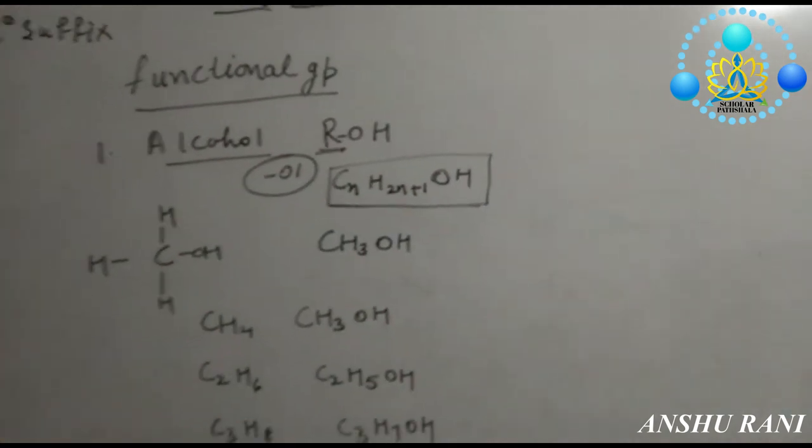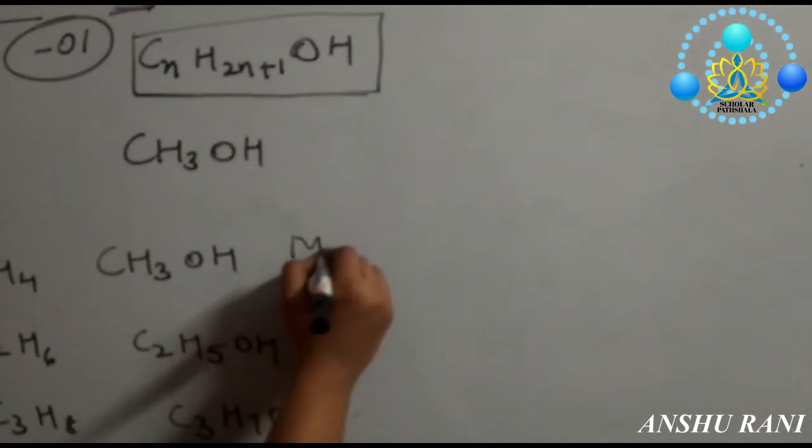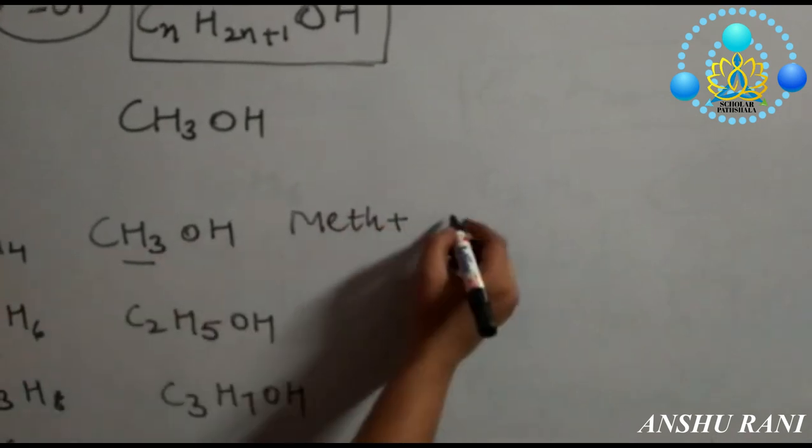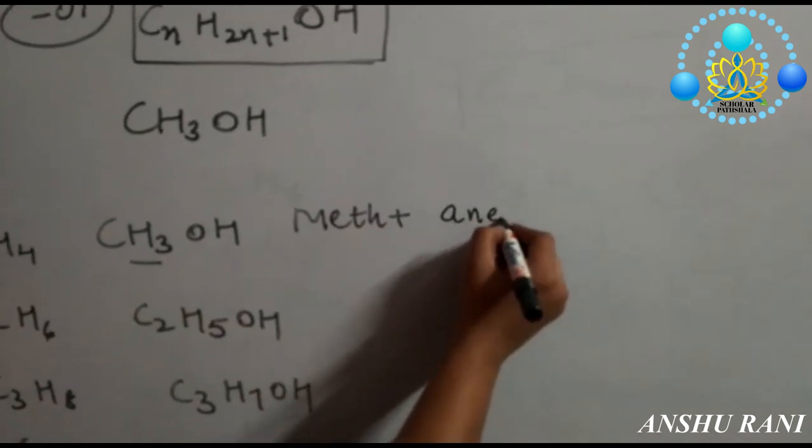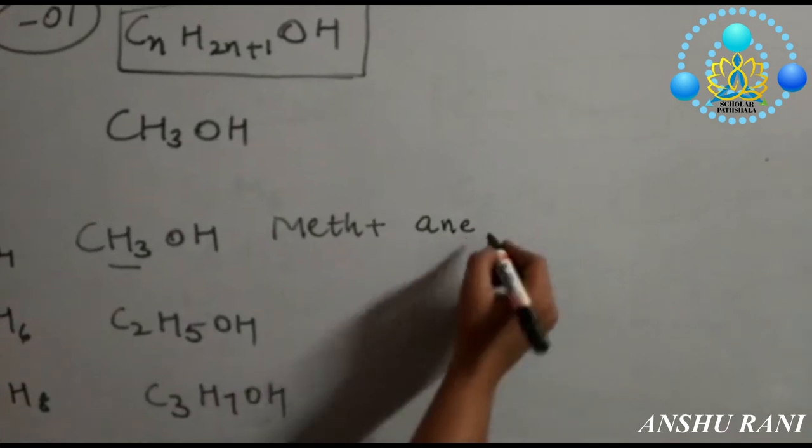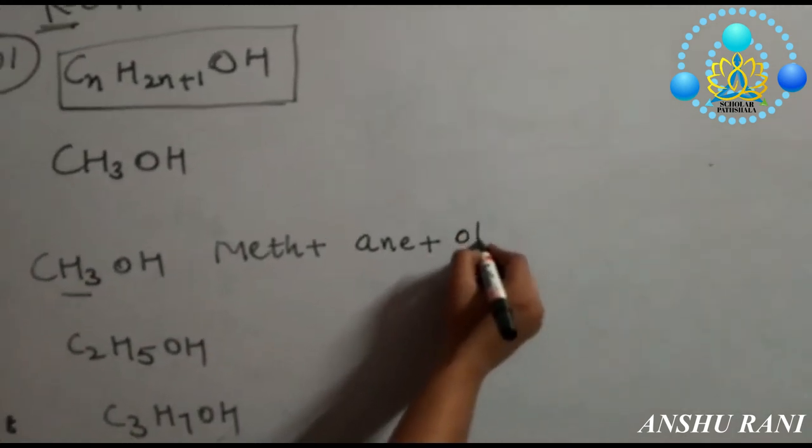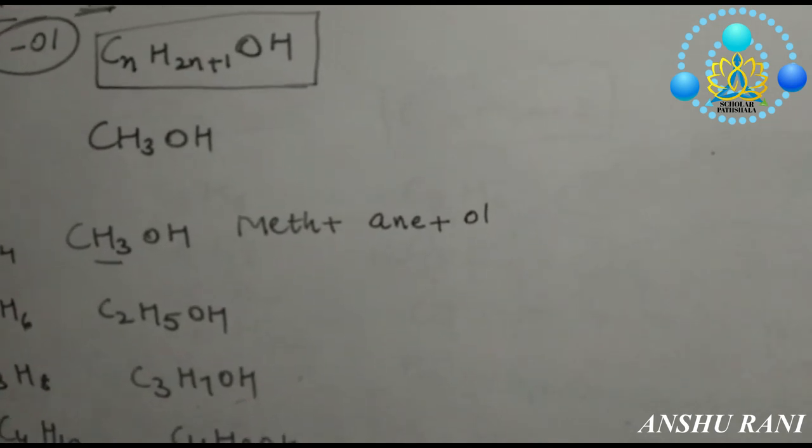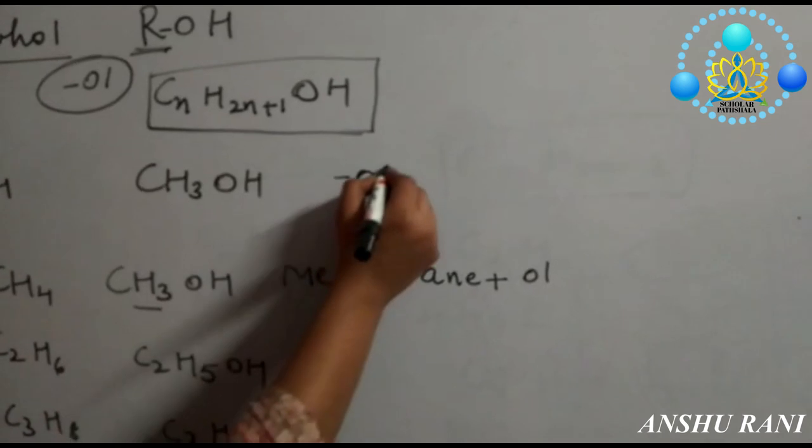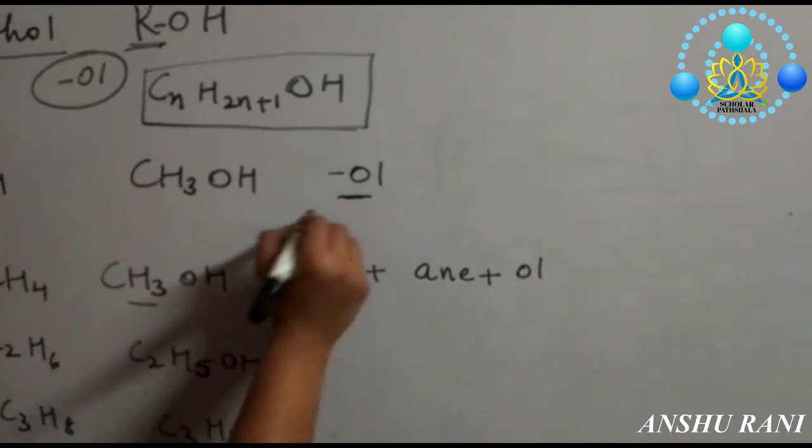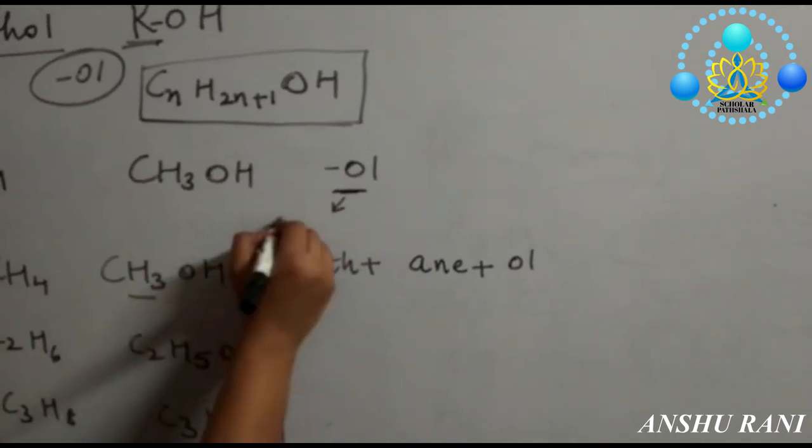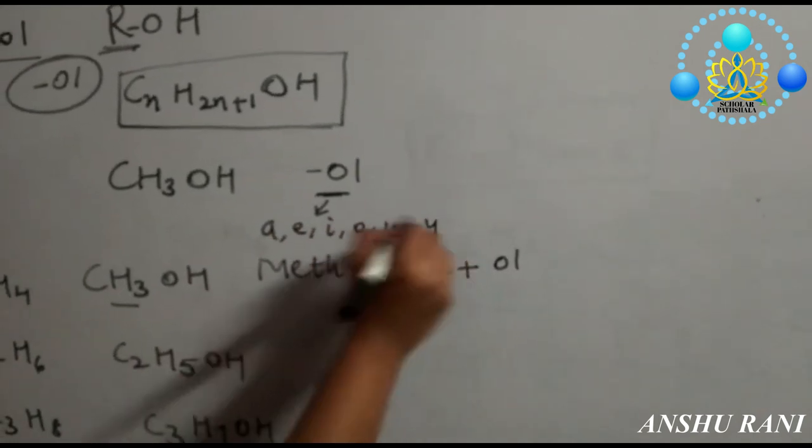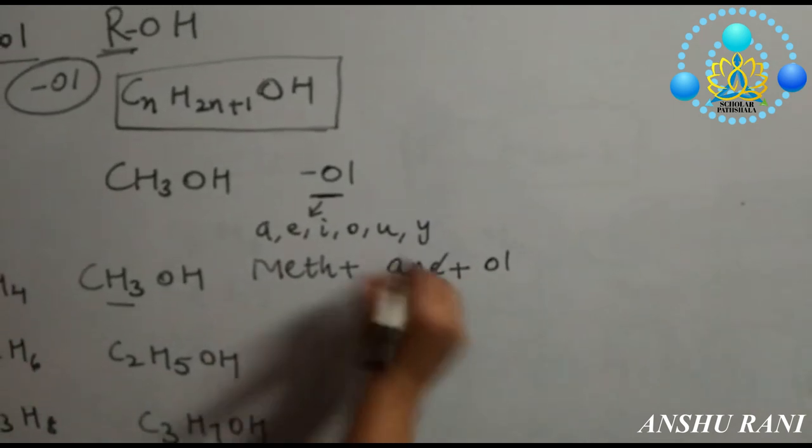Now how to write the names. Firstly we will write word root, meth for one carbon. Then -ane for carbon-carbon single bond, and -ol for alcohol group. Now one thing you have to keep in mind: if this first letter of your secondary suffix starts with any vowel like A, E, I, O, U or Y, then we have to remove this E.